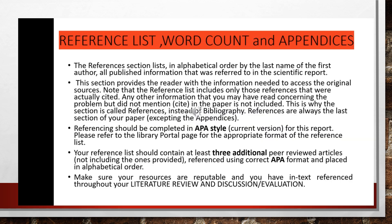The last things you need to include: make sure you've got your references and double check the word count. Depending on your task, you may need appendices. The reference section lists in alphabetical order — by the last name of the first author — all published information referred to in the scientific report. This section provides the reader with the information needed to access the original sources. The reference list includes only those references actually cited within the text — any other information you read but did not cite should not be included. This is why the section is called 'references' instead of 'bibliography'.